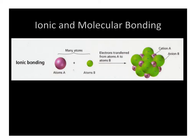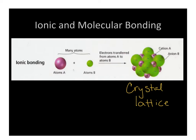Here is a picture of what happens when our particles become charged. Atom A gives its electrons to B, so A becomes positive and B becomes negative. It's not just these two forming a bond — all the negatives want to be next to the positives, and vice versa. So they form a crystal lattice, where all the little pieces are stuck together in a pattern.